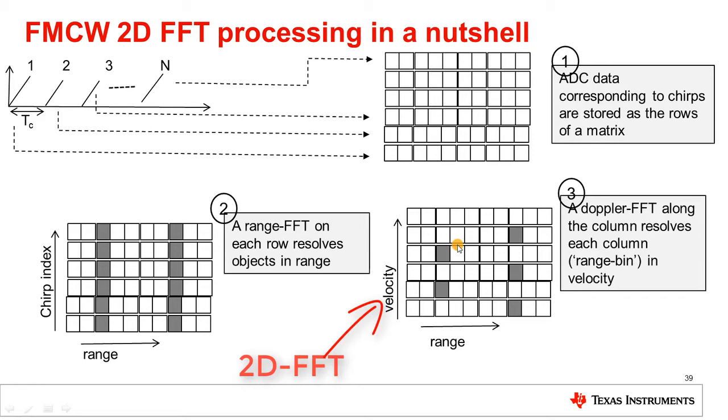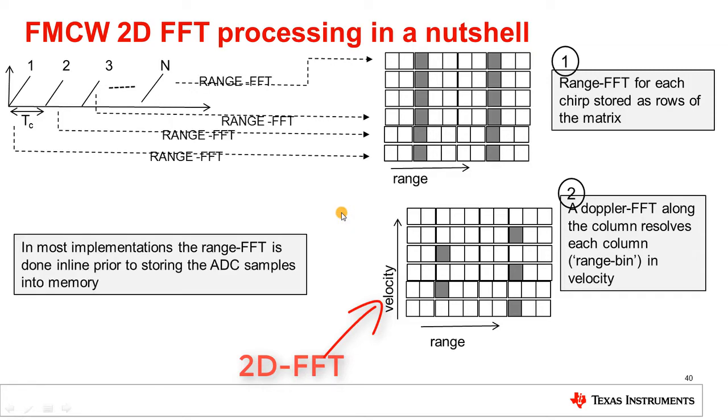One thing to note is that in most implementations of FMCW radar, the range FFT is usually done in line as the ADC data for each chirp becomes available. You can think of the ADC data for each chirp as being received at a DSP. The DSP then performs the range FFT and then stores the range FFT in some memory. So, it could be L3 memory or DDR, depending on the system. The other thing to note is that the Doppler FFT can only be performed once all the range FFTs have become available. That is, once all these rows are populated. So, there should be sufficient memory in the system to store the contents of all the range FFTs corresponding to a frame.